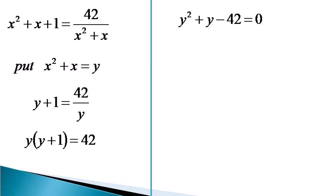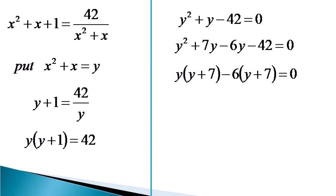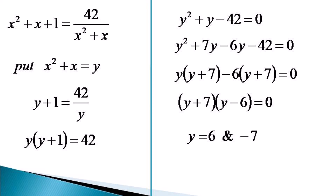Now we will find two factors of minus 42 whose sum is plus 1. Those two factors are plus 7 and minus 6. The equivalent equation can be written as y squared plus 7y minus 6y minus 42. Taking common y from the first two terms and minus 6 from the last two terms, then taking common y plus 7, we get y plus 7 into y minus 6 is equal to 0, giving us two values of y: y equals 6 and y equals minus 7.